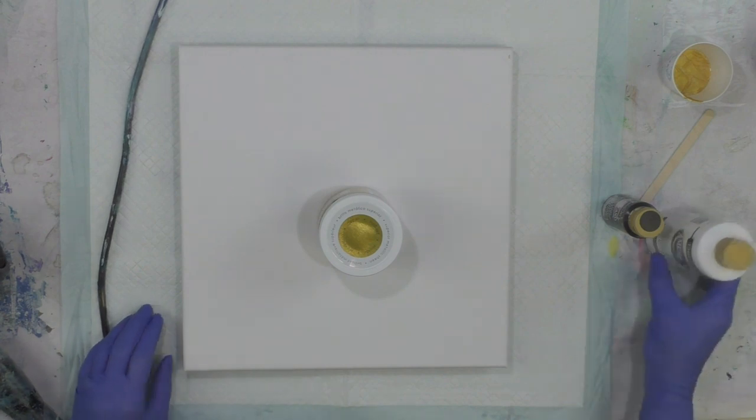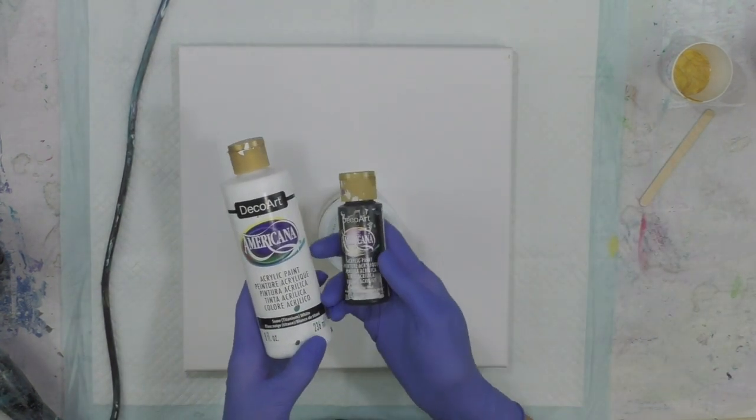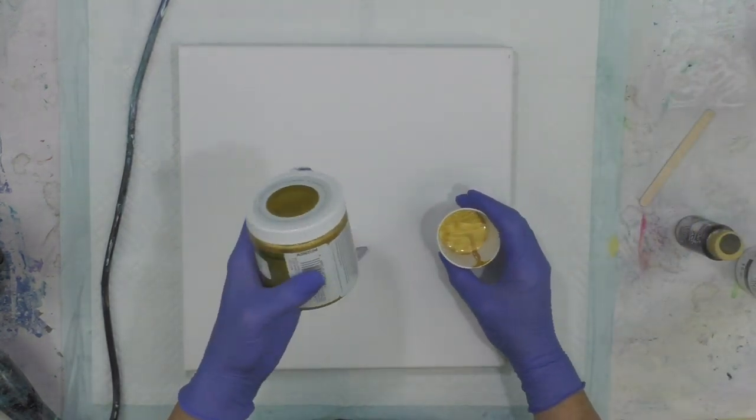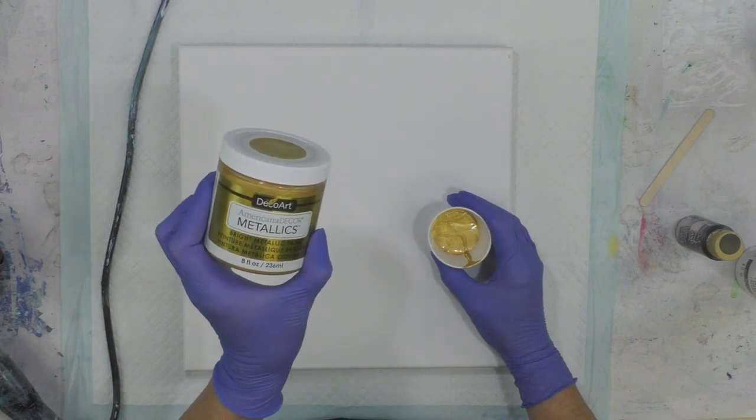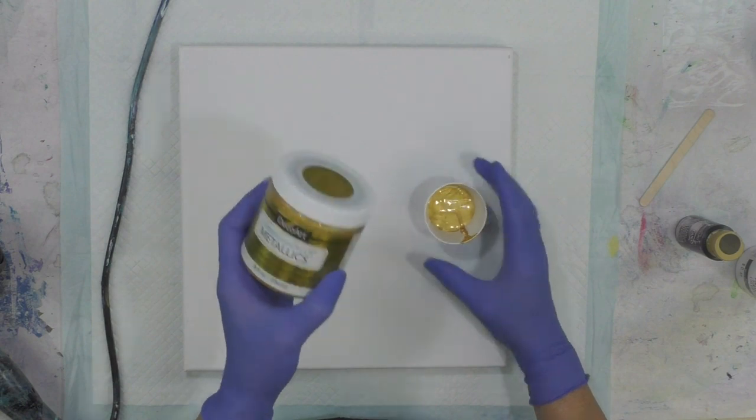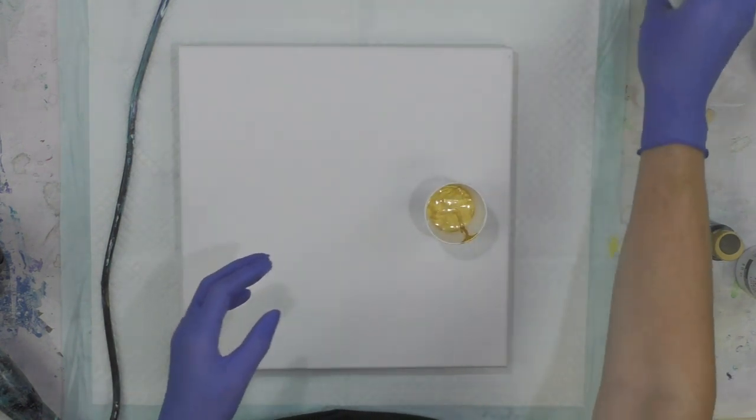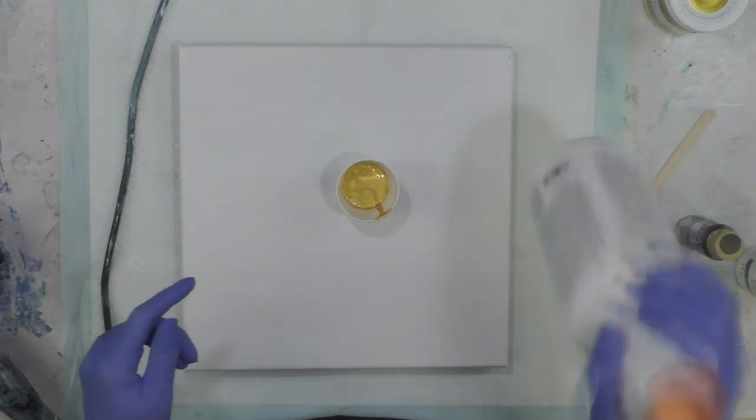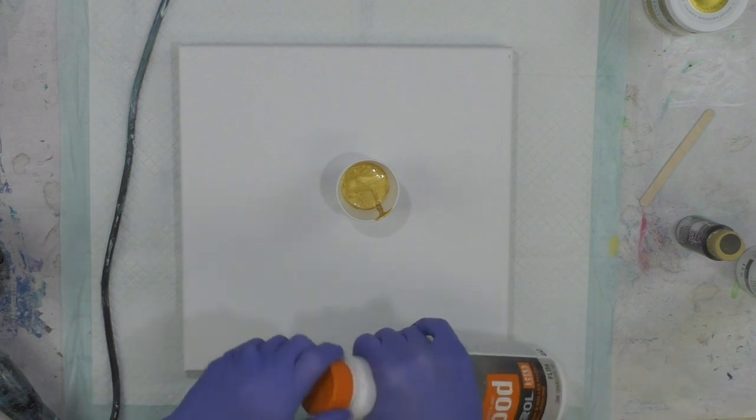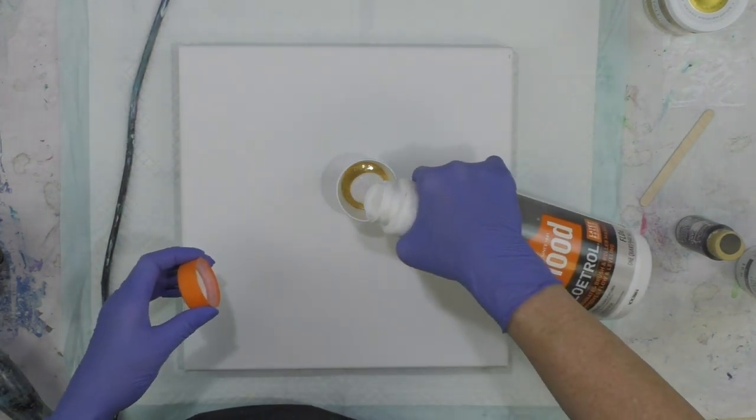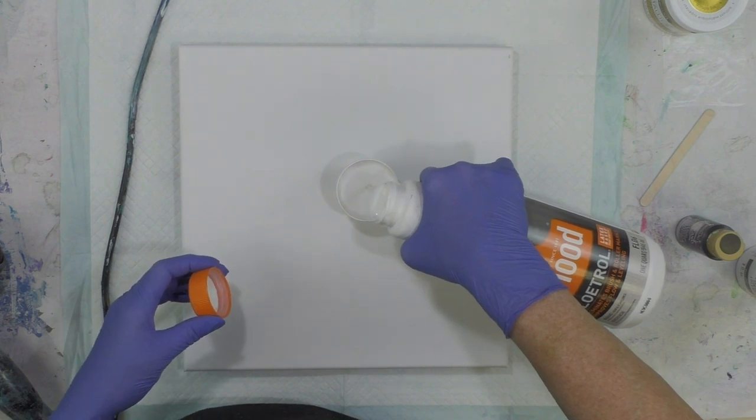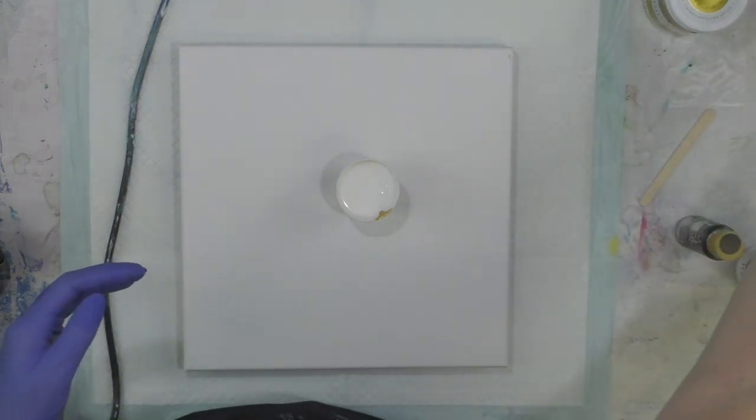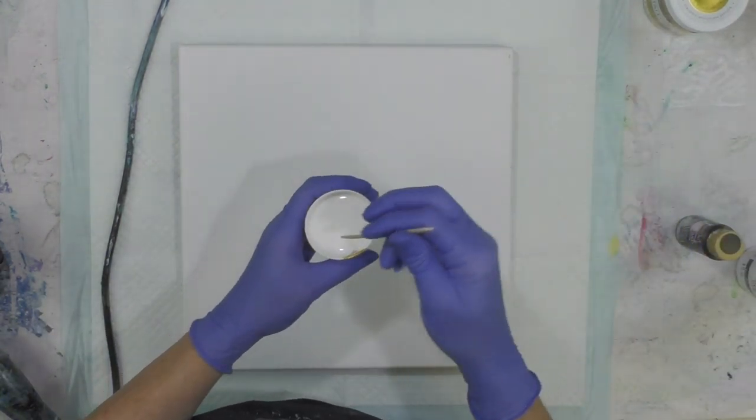I'm using DecoArt Titanium White and Lamp Black, and one metallic gold which is the 24 Karat Gold from the Americana Decor Metallics. It's a beautiful metallic gold. My ratio is one to one with Floetrol. I don't have to add water to the black and white for sure, but we're going to see on the gold because sometimes metallics are a little thicker, so you do have to add some water sometimes.